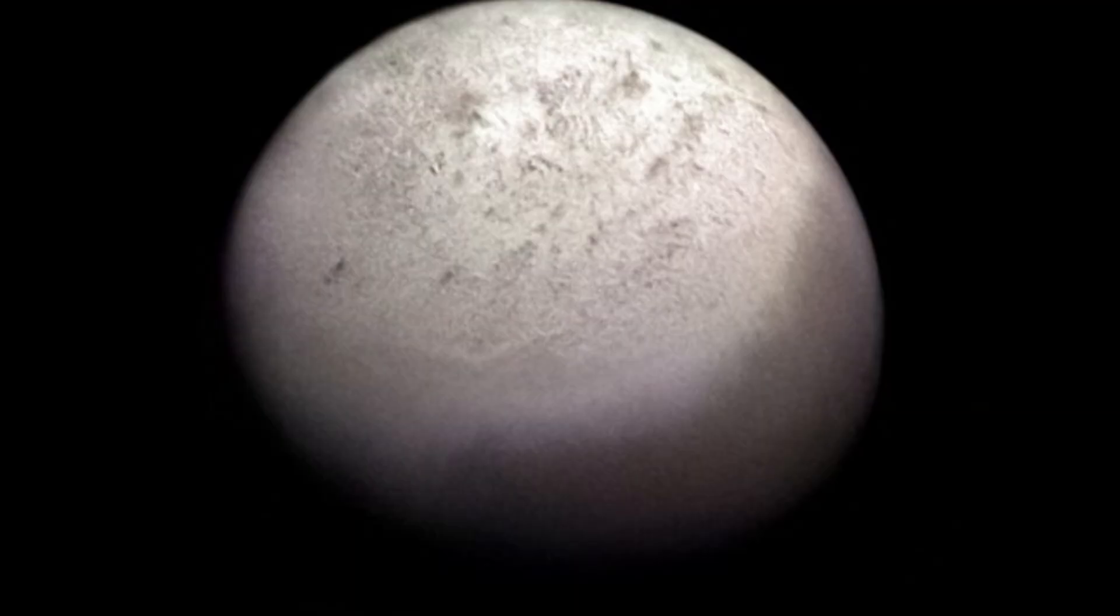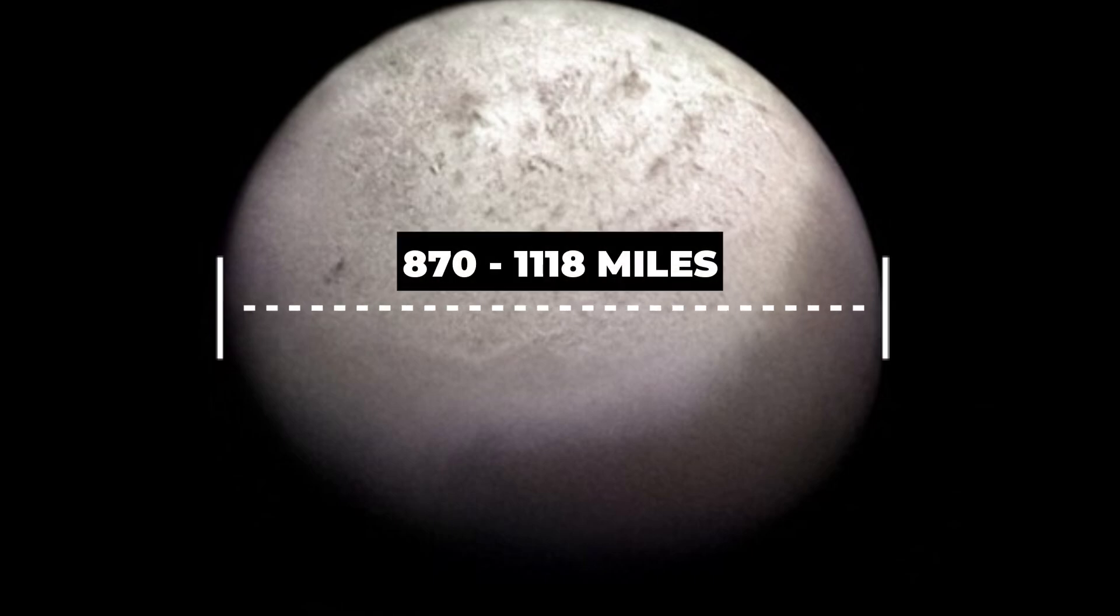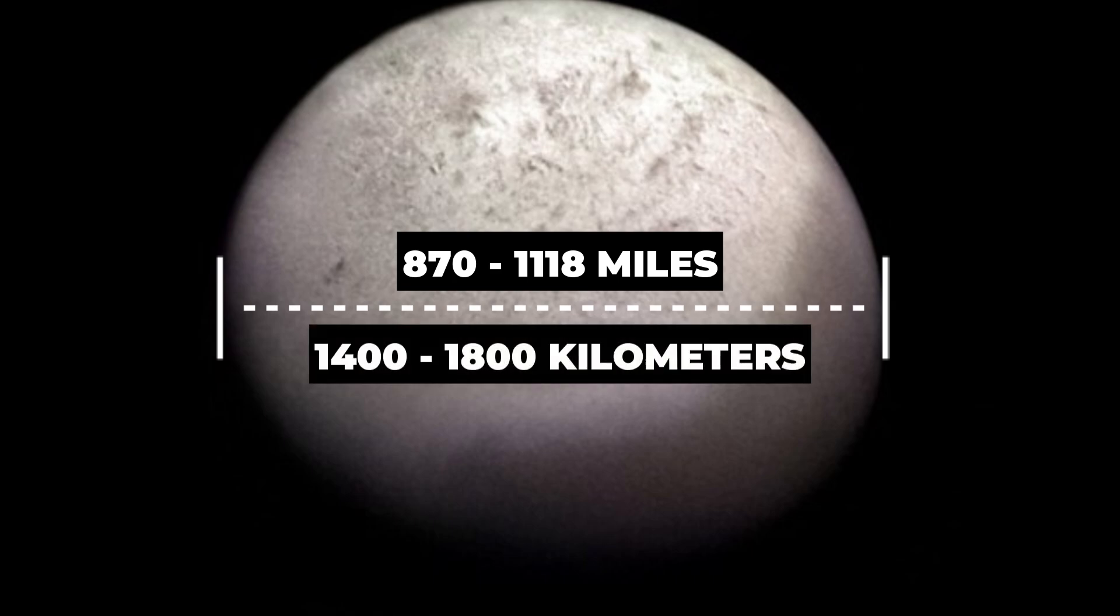Triton, situated in the lower right corner of the image, was barely noticeable, with a radius estimated between 870 and 1,118 miles, or 1,400 and 1,800 kilometers. The image showed Triton's surface as bright as freshly fallen snow.